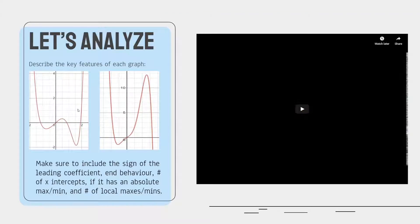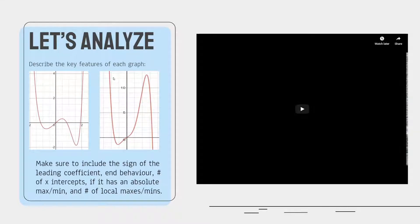Let's look at this for example. We have 1, 2, 3 turning points, which is n minus 1, so this should be a degree 4 polynomial. This one has 1 and 2, so this could be a third degree function.